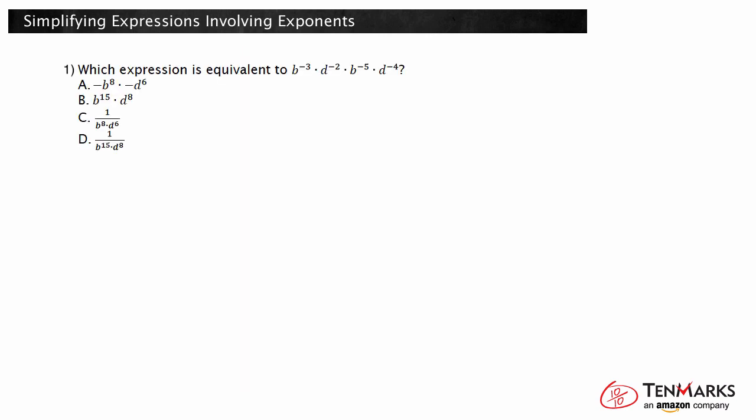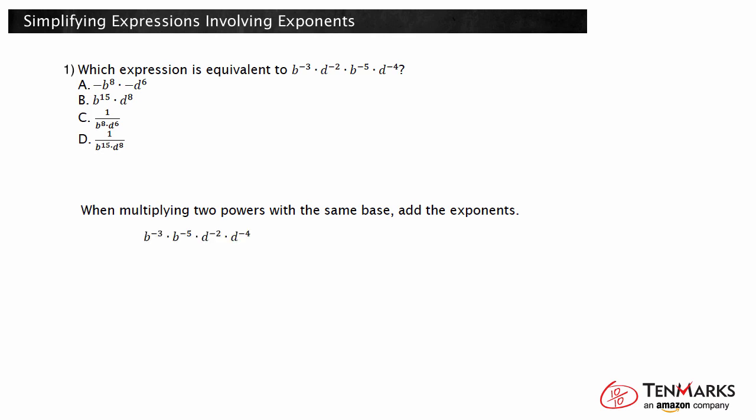Now let's use these rules to simplify some expressions. Which expression is equivalent to b to the negative third times d to the negative second times b to the negative fifth times d to the negative fourth? When multiplying powers with the same base, you can add their exponents. Not all of these have the same base, so use the commutative property to reorder the values so that the powers with the same bases are grouped together. Now you have b to the negative third times b to the negative fifth times d to the negative second times d to the negative fourth.